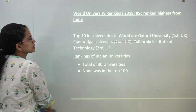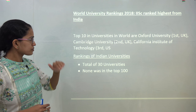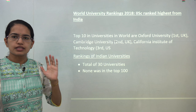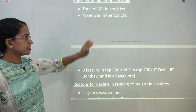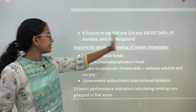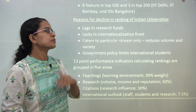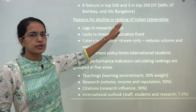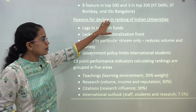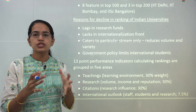For the 2018 worldwide university rankings, IISc was ranked highest from India. Oxford ranked first overall, followed by Cambridge and California. From India, 30 universities were selected — none came in the top 100, eight featured in the top 500, and three featured in the top 200: IIT Delhi, IIT Bombay, and IISc Bangalore. Reasons Indian universities lag include lack of research funds, inability to internationalize, and focus on only a single stream like engineering or management.